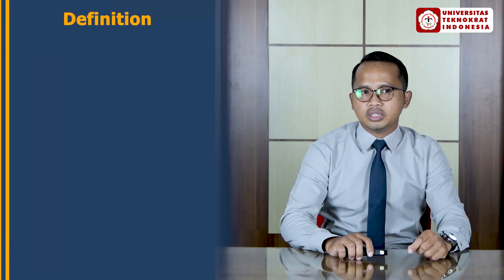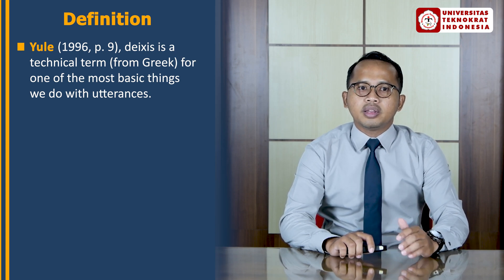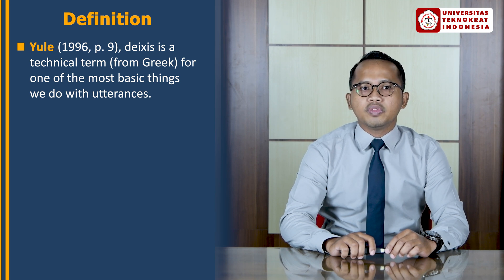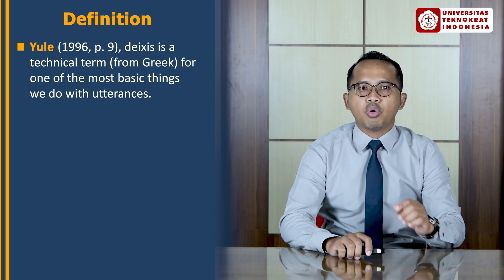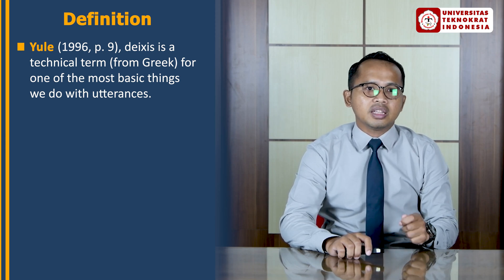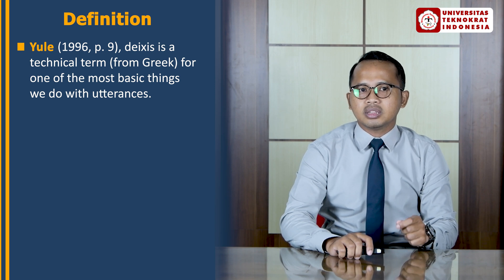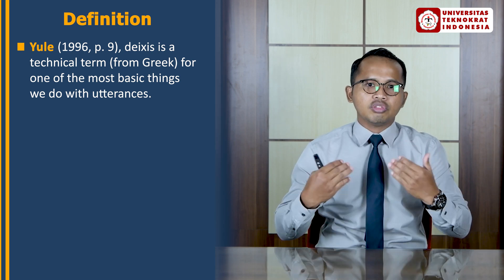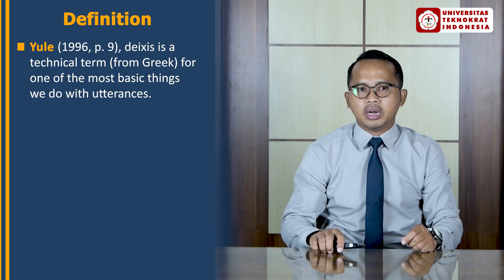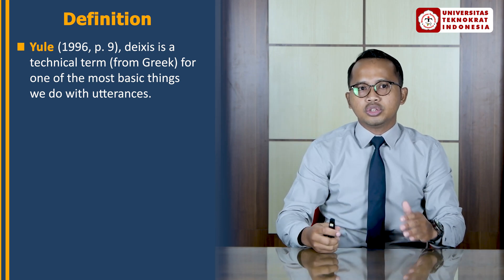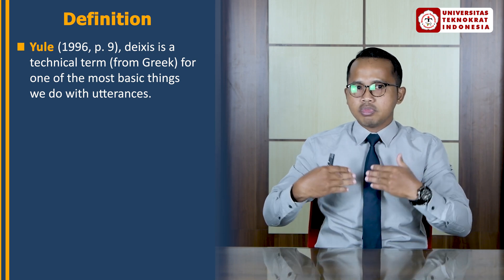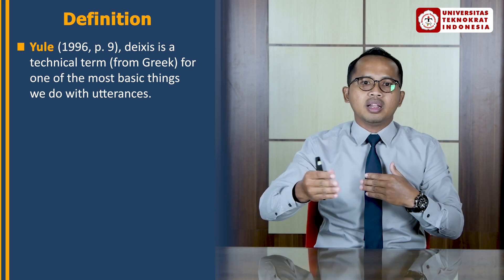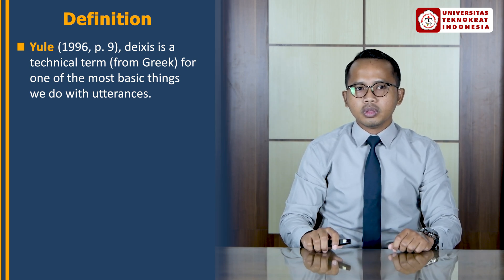So take a look at the definitions of deixis. The first is from Yule in 1996: deixis is a technical term taken from Greek for one of the most basic things we do with utterances — it means pointing via language. It is clearly a form of referring that is tied to the speaker's context, with the most basic distinctions between deictic expressions being near to the speaker, or proximal, versus away from the speaker, or distal. So here refers to the nearest position from the speaker, and there refers to a position close to the addressee or away from the speaker.